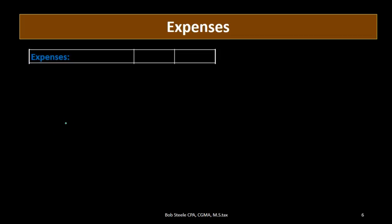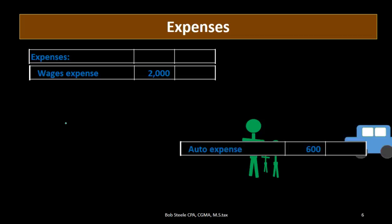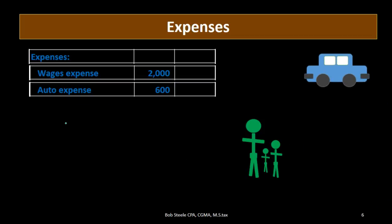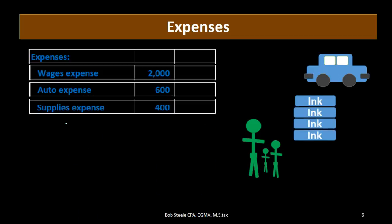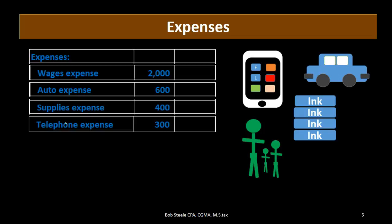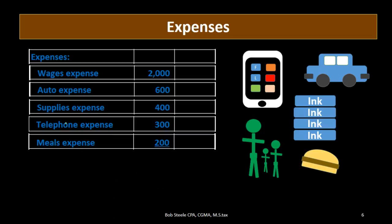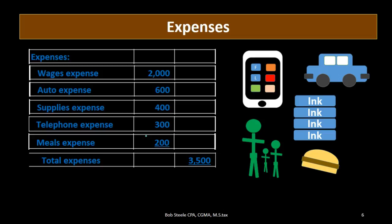The dollar amount will hopefully be less, but the things we spend that money on will vary more greatly. Therefore we're going to have the expenses subcategorized, and we'll list them out: wages $2,000, auto expense — again, that's the gas and maintenance — $600, supplies $400 (that's what we consumed), telephone expense $300, and meals and entertainment $200. There's no particular required order, but listing the largest expense on top is a logical format. Adding them all up: $2,000 plus $600 plus $400 plus $300 plus $200 gives us total expenses of $3,500.